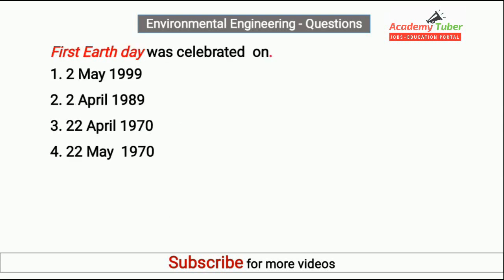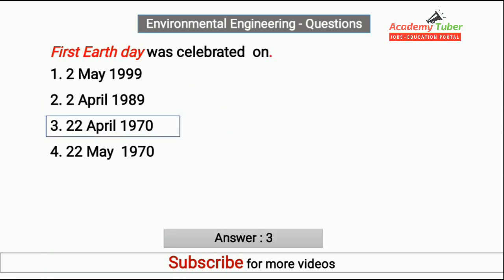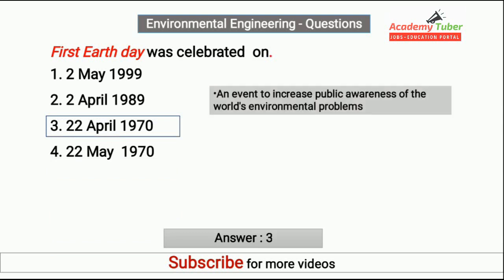First Earth Day was celebrated on? Answer is 22nd April 1970. It was an event to increase public awareness of world environmental problems.